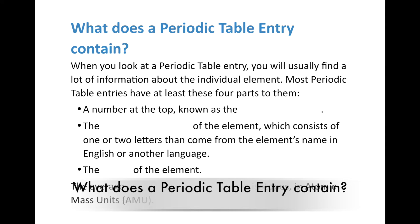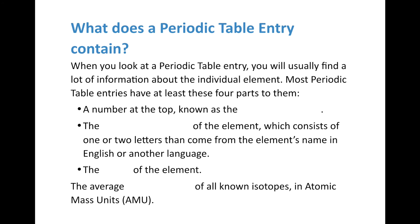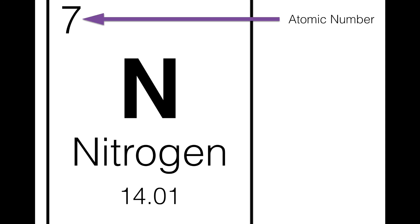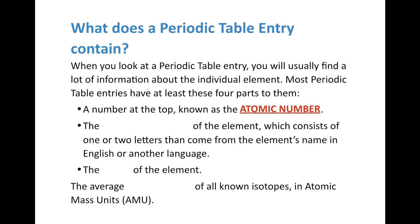You might be asking yourself: what are all those boxes, and what exactly do they contain? Most Periodic Table entries have at least four parts. The first part is the number at the top — that's the atomic number, or the number of protons. The next thing is the chemical symbol of the element, which consists of one or two letters. Elements with three-letter symbols are actually undiscovered elements that we haven't given an official name yet, often because they were created artificially. Their name usually comes from the element's name in English or another language.